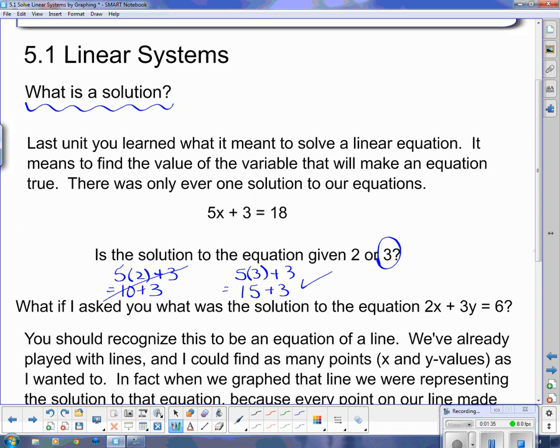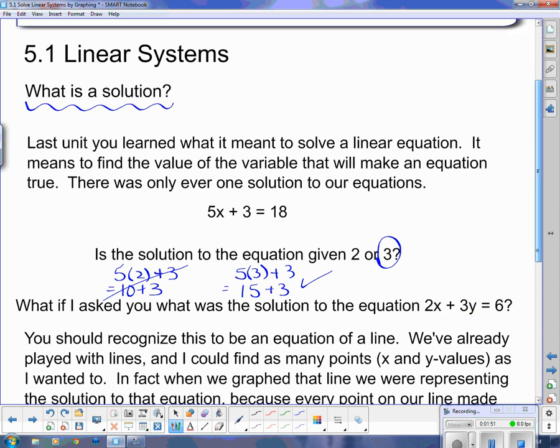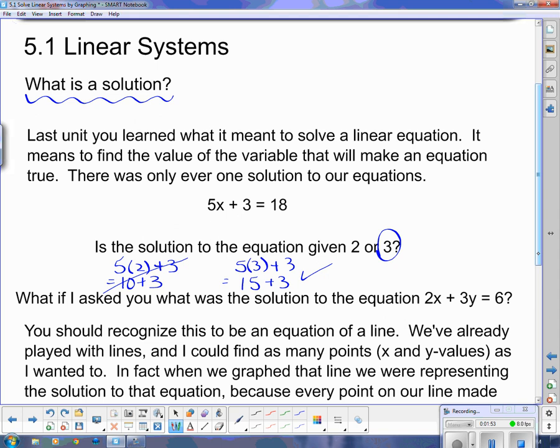But what if I asked you this? What is the solution to this equation? There's both an x and a y, and x and y are different things. We plug in different numbers to x and y, but you should recognize that we've actually dealt with things like that before. That's a line. And we found a whole bunch of points on a line, and every point was a value of x and a value of y that made this equation true.